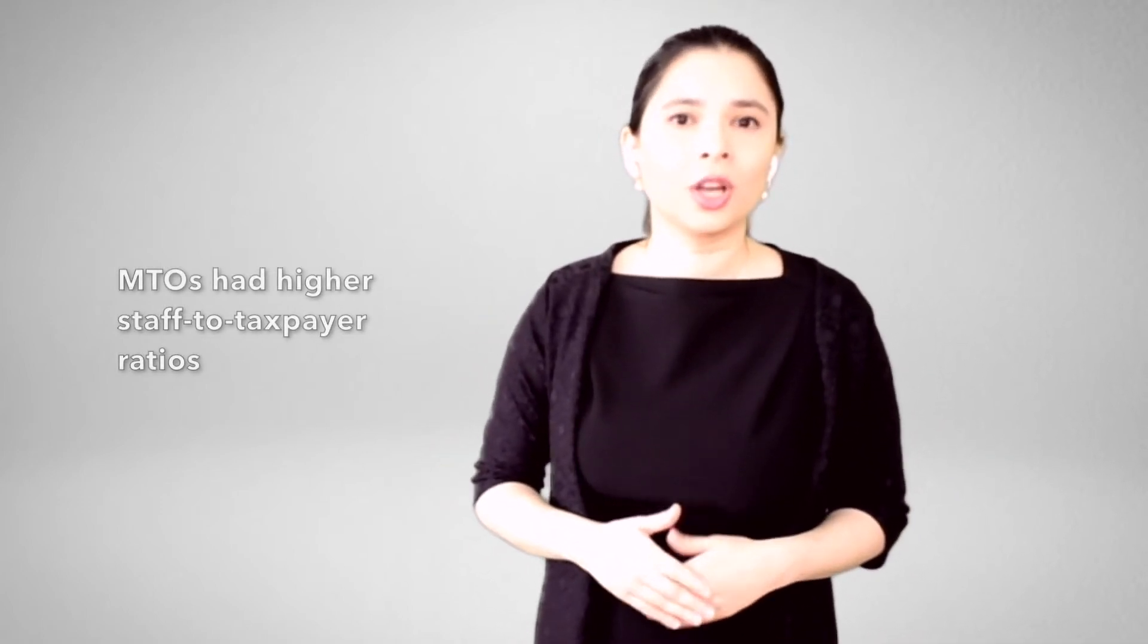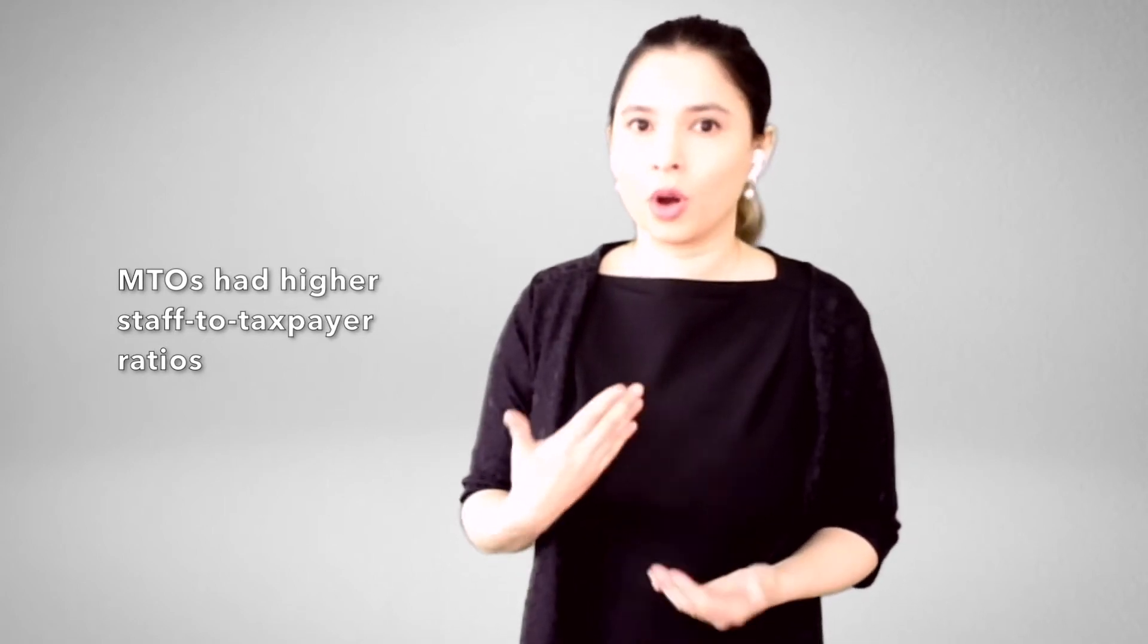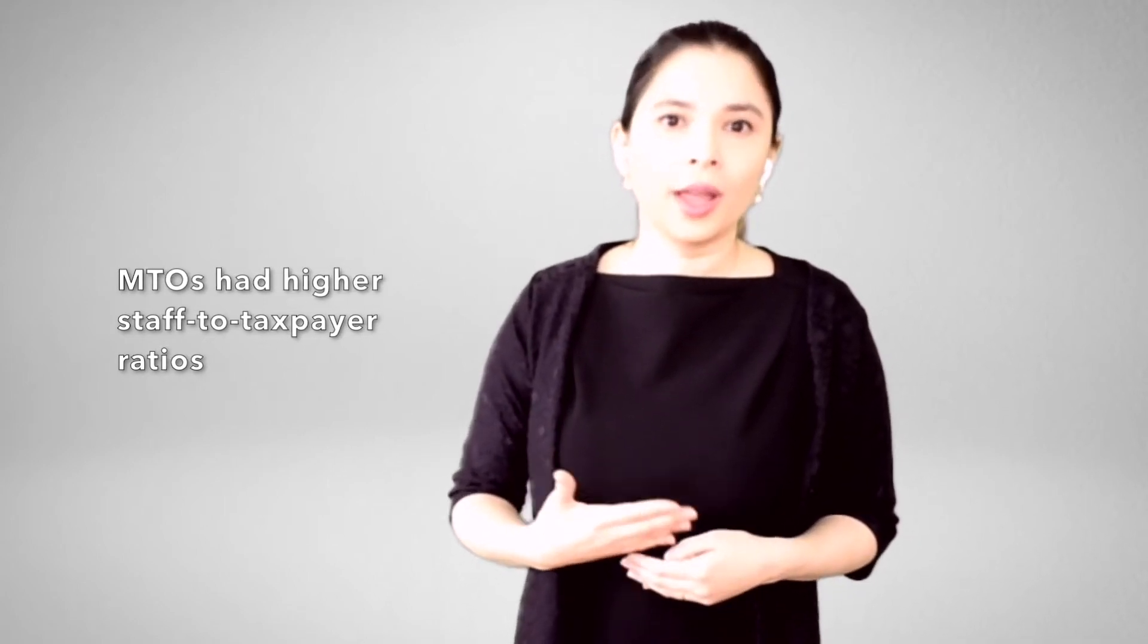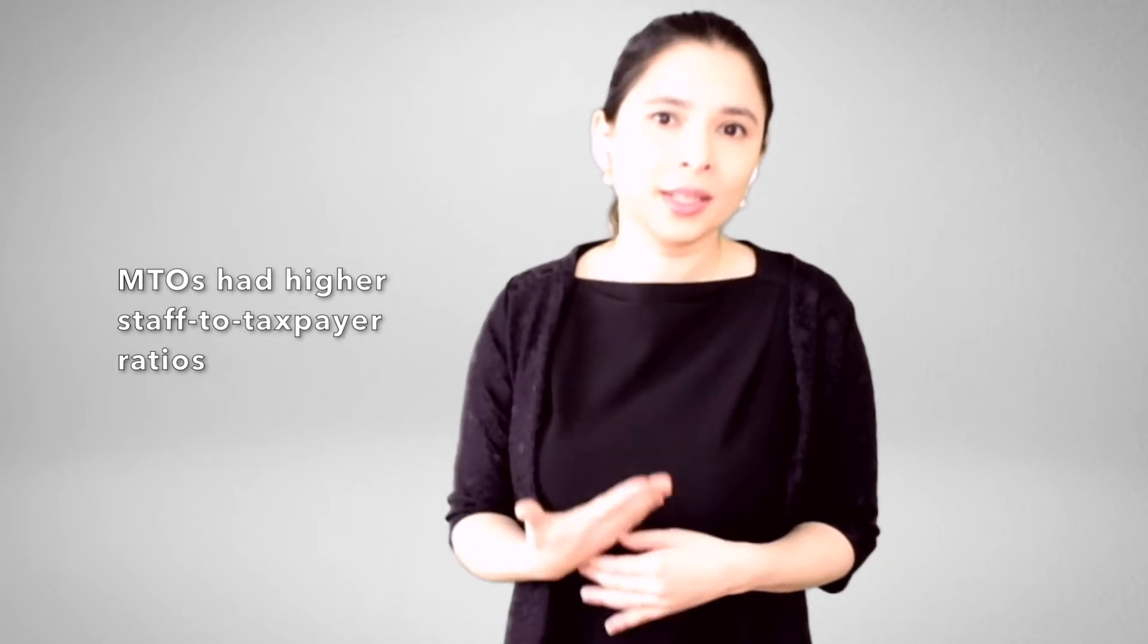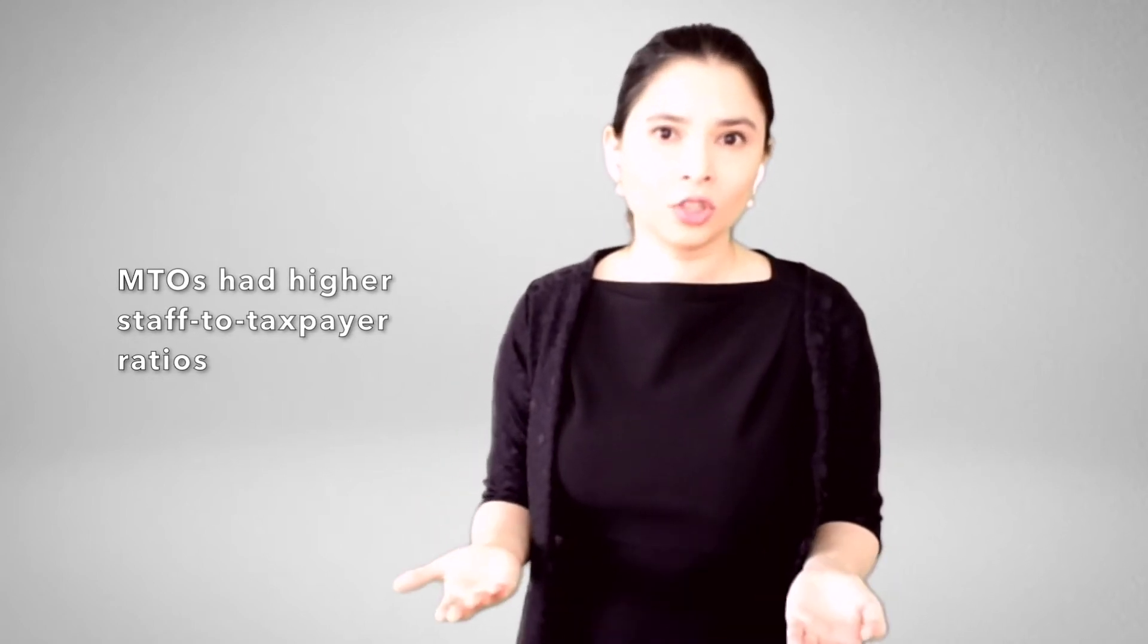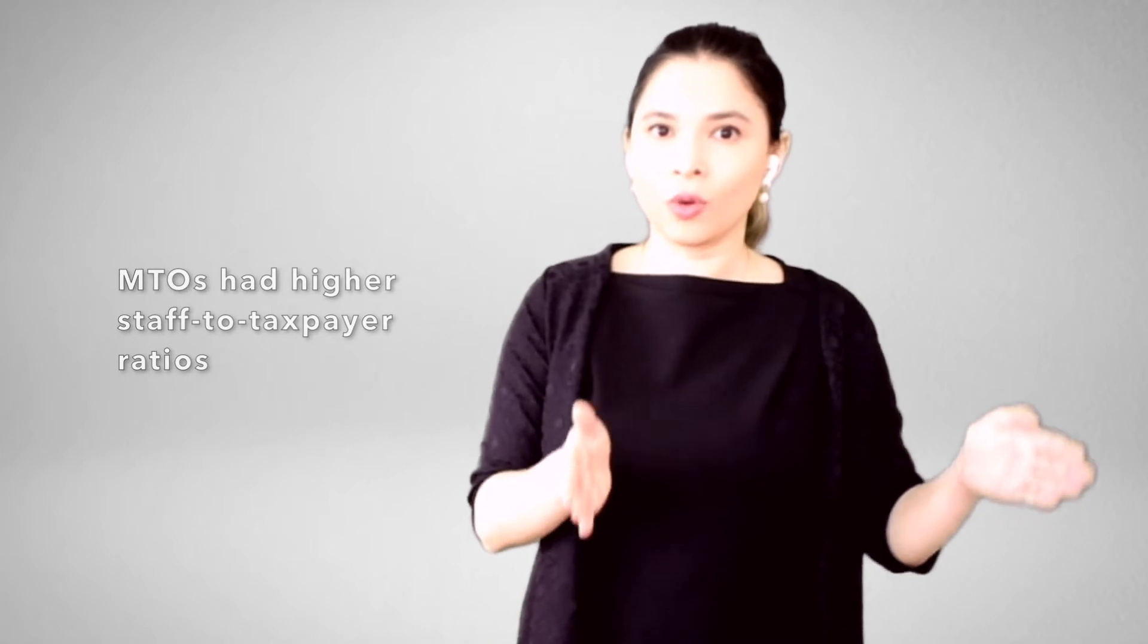The first one is what the MTO offices were really about. Compared to the primary tax offices, which were the default tax offices at the time, the MTO offices had the same IT structure, the same organizational structure that remained the same throughout the whole period, but the MTO tax offices had much higher staff to taxpayer ratios. This leads to a much higher tax enforcement environment. You have more auditors, for example, and a much higher tax capacity environment. For example, you have more staff to answer questions. That's what the MTO was really about.